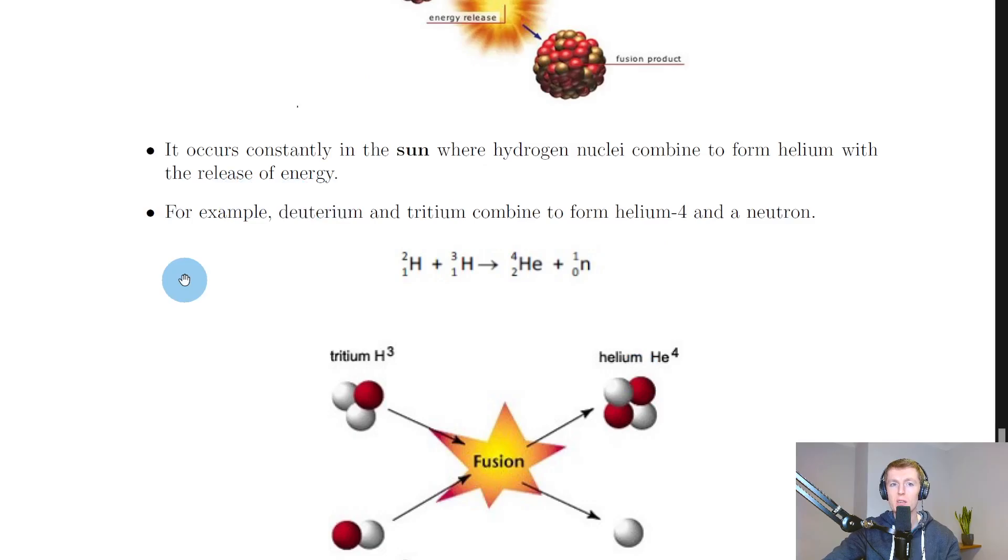Going back to the notes, it says that nuclear fusion occurs constantly in the sun where hydrogen nuclei combine to form helium with the release of energy. So that's why we think of hydrogen as the sun's fuel source, because the hydrogen is fusing together to form helium and that's produced to power the sun.